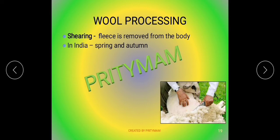Wool processing fleece has to undergo many processes before it can be made into yarn or fabrics. The first and foremost process is called shearing — the process by which fleece is removed from the body of an animal. It is like giving the animal a haircut and is done manually using clippers or razors, or using shearing machines.